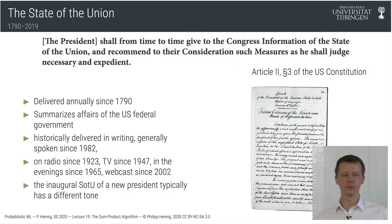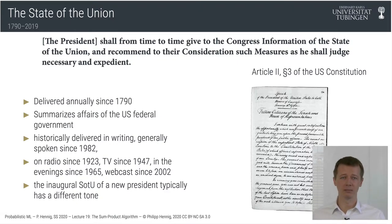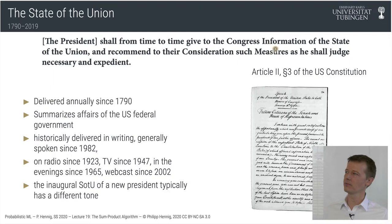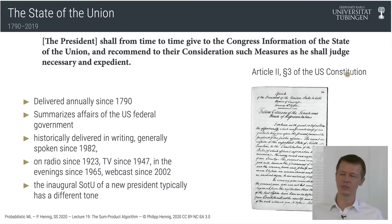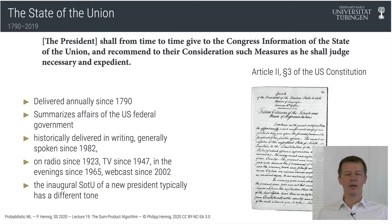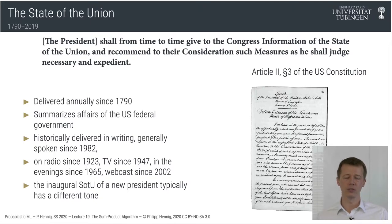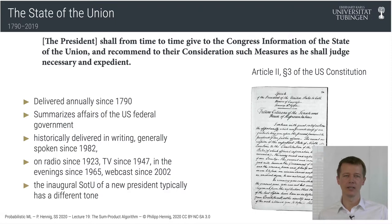The US American Constitution, Article 2, states that the president shall from time to time give to the Congress information of the State of the Union and recommend to their consideration such measures as he shall judge necessary and expedient. Note the Constitution apparently thinks the president is always a man. This stipulation means this kind of presentation or speech has been given every single year — actually in one year there were two addresses — since 1790. That means we have a continuous set of data going back over 230 years.